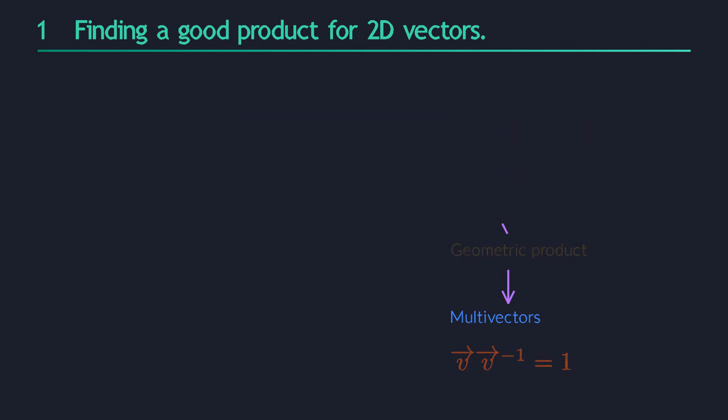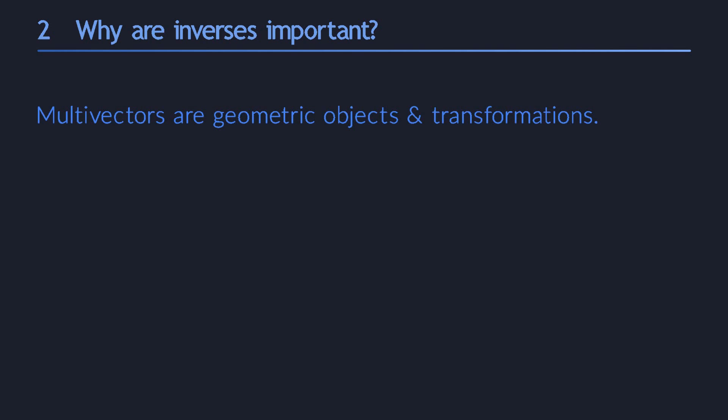Why do we so desperately want to be able to invert the product between two vectors? What's so important about that? Well first of all, our new product will allow us to write many geometric concepts and algorithms in a purely algebraic way. The multivectors in our new algebraic system will play the roles of lines, planes, circles, reflections, rotations and other geometric objects and transformations.